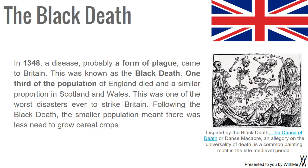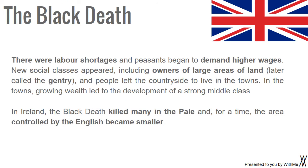In 1348, a disease, probably a form of plague, came to Britain. This was known as the Black Death. One third of the population of England died, and a similar proportion in Scotland and Wales. This was one of the worst disasters ever to strike Britain. Following the Black Death, the smaller population meant there was less need to grow cereal crops, there were labour shortages, and peasants began to demand higher wages.